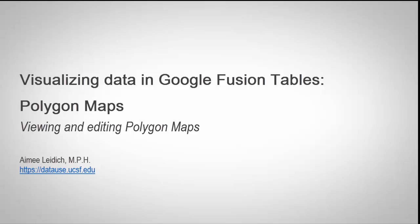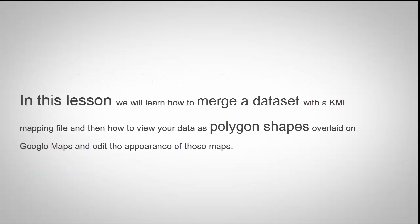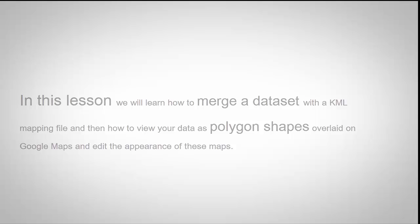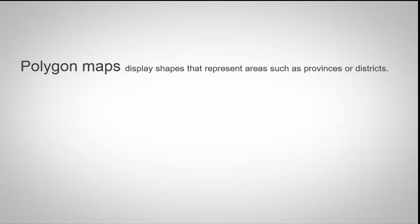Hello. Welcome to this module on Visualizing Data as a Polygon Map in Google Fusion Tables. In this lesson, we will learn how to merge a dataset with a KML mapping file, and then how to view your data as polygon shapes overlaid on Google Maps and edit the appearance of these maps. A polygon map displays shapes that represent areas such as provinces or districts.